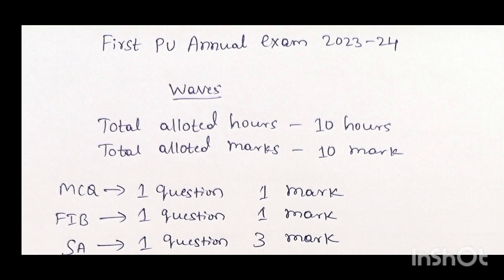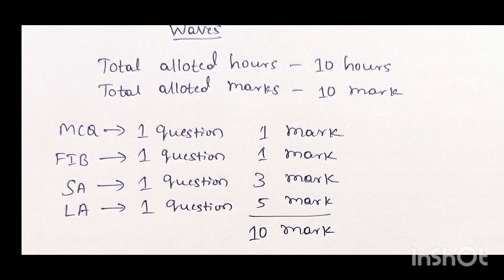Hi everyone, today I am going to discuss important questions on the waves chapter. From the waves chapter, the total allotted marks is 10 for your annual exam. This 10 mark is distributed into several sections. The first one is MCQ questions — from this chapter you are going to get one MCQ question, which is multiple choice.